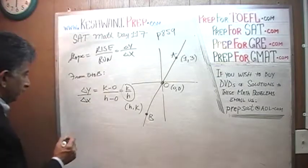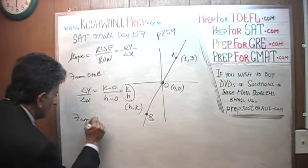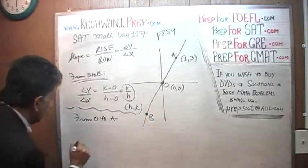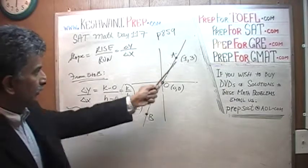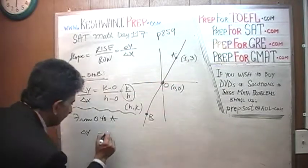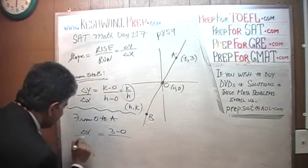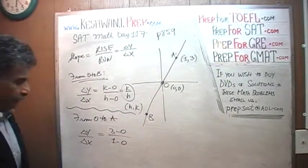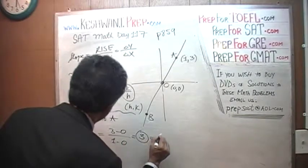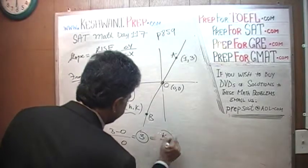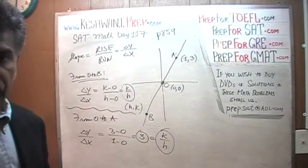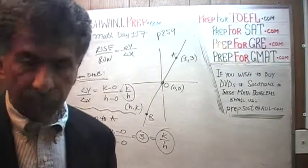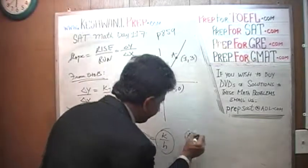From O to A, the change in Y would be 3 minus 0 over change in X, which is 1 minus 0, which is simply 3. And that is your ratio of K over H. The ratio of K over H is the slope of the line, which we just found out to be 3. The answer is A.